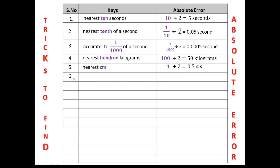Sixth: if the key is nearest 5 centimeters, the absolute error will be half of 5 centimeters, which is 2.5 centimeters. Seventh: if the key is nearest 1 centimeter squared, or nearest centimeter squared, your absolute error will be 1 divided by 2, which is 0.5 centimeter squared.